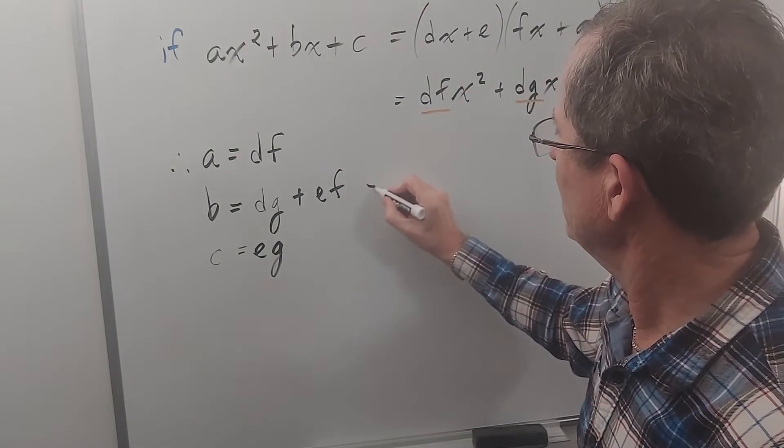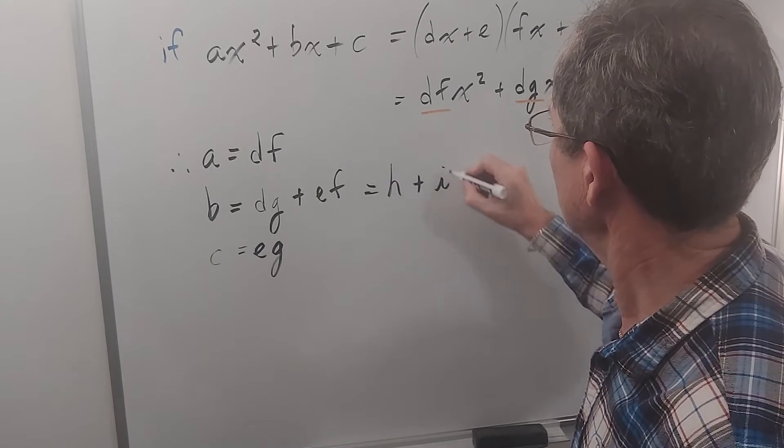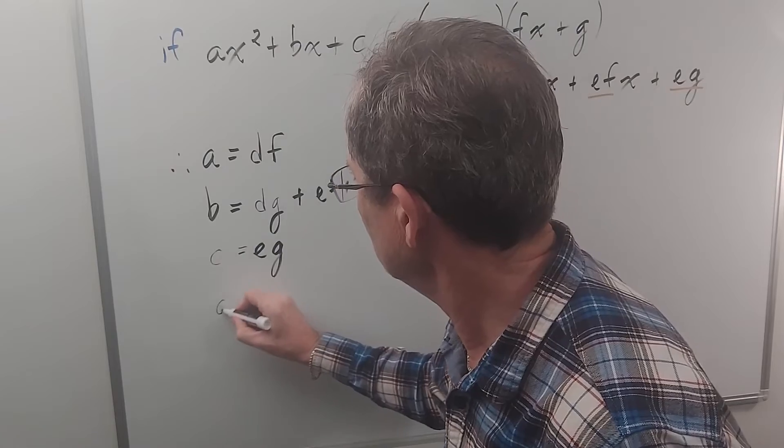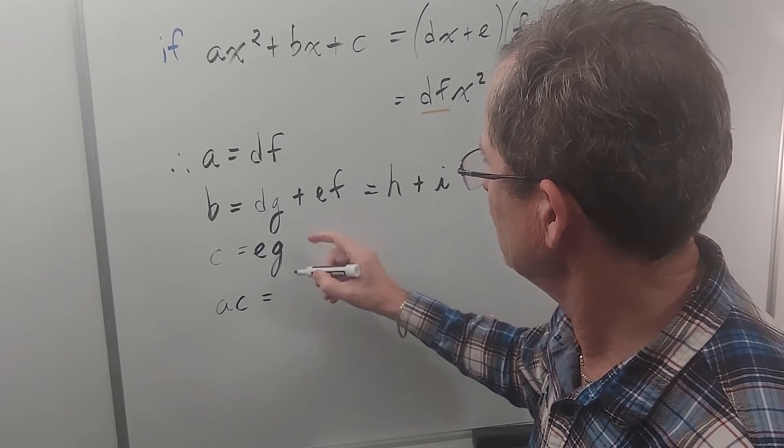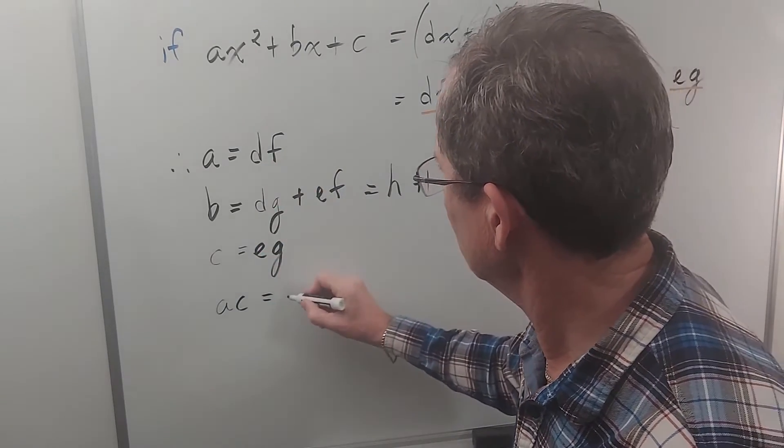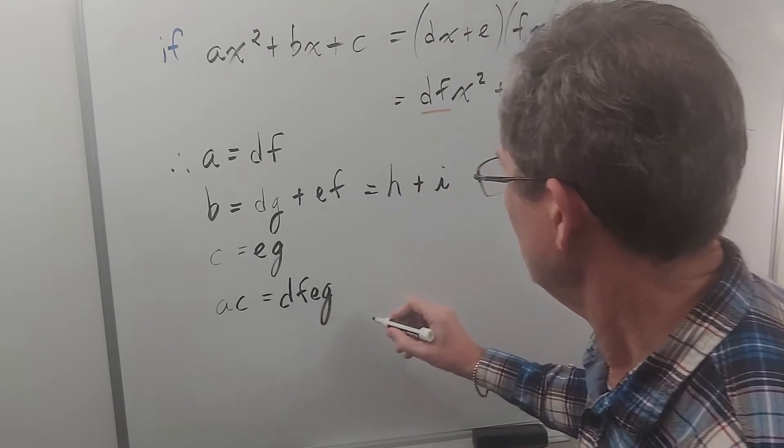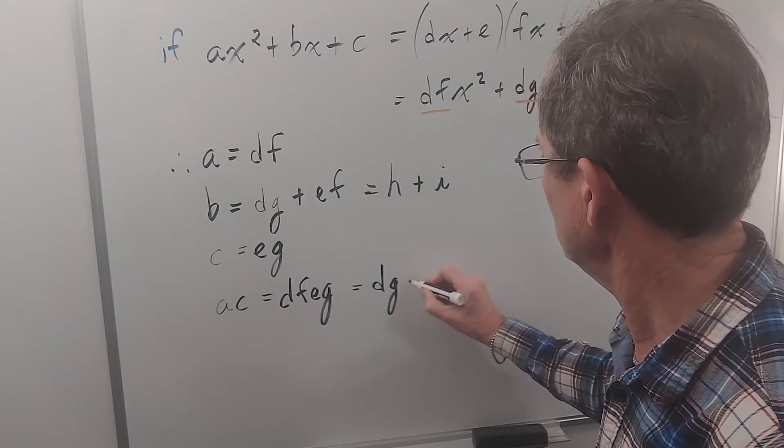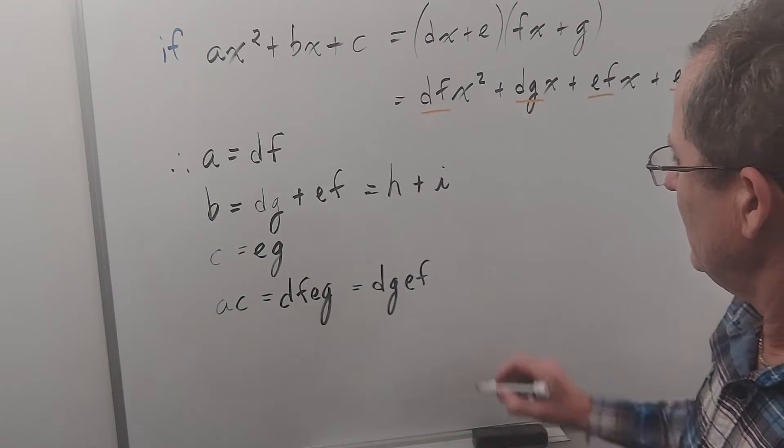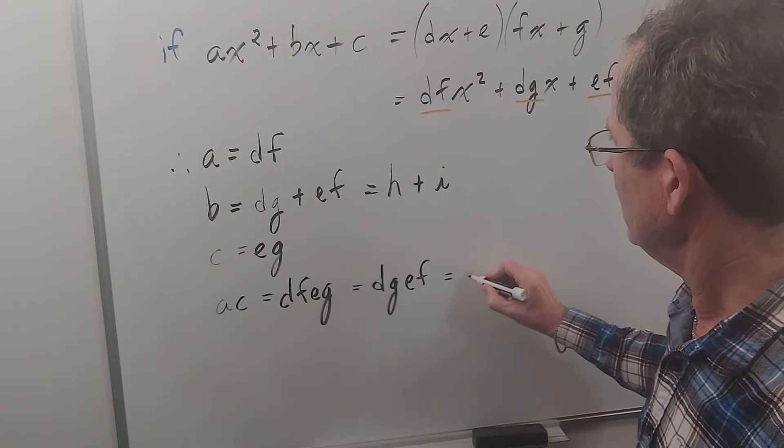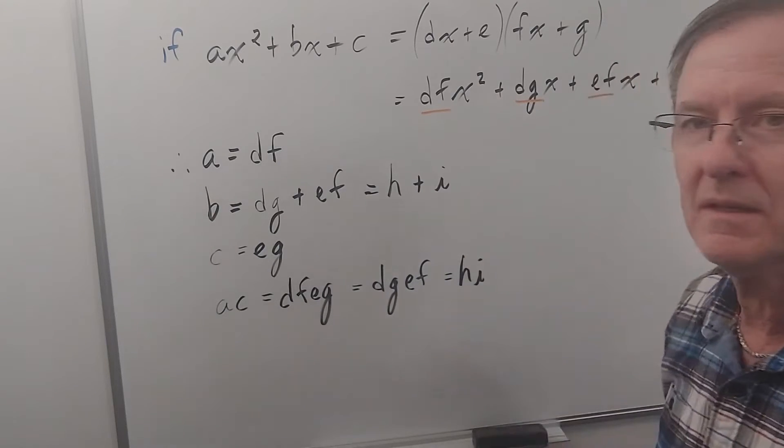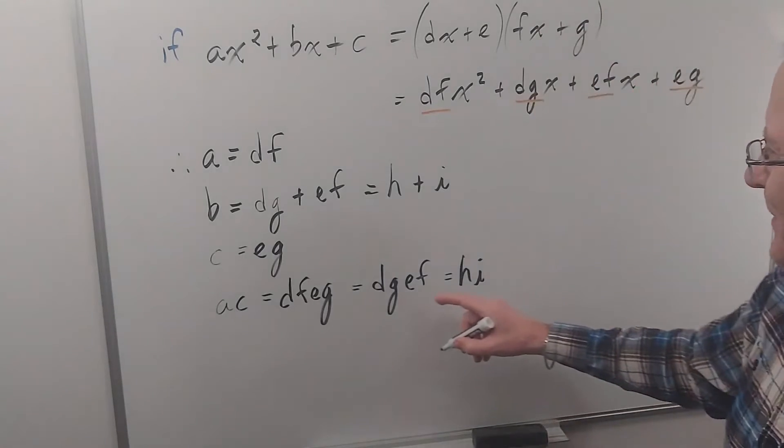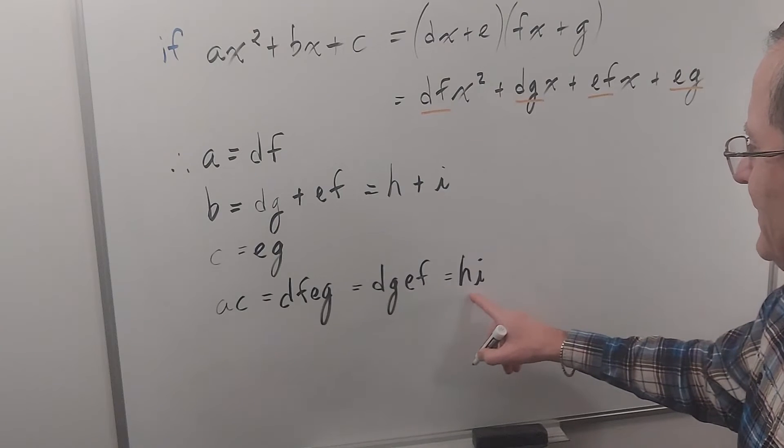Now let's write this as h plus ef, and let's multiply ac. Ac is df times eg, which I can rewrite as dg times ef by just changing the order, and notice that's the same as h times ef. By rearranging those letters you get that.